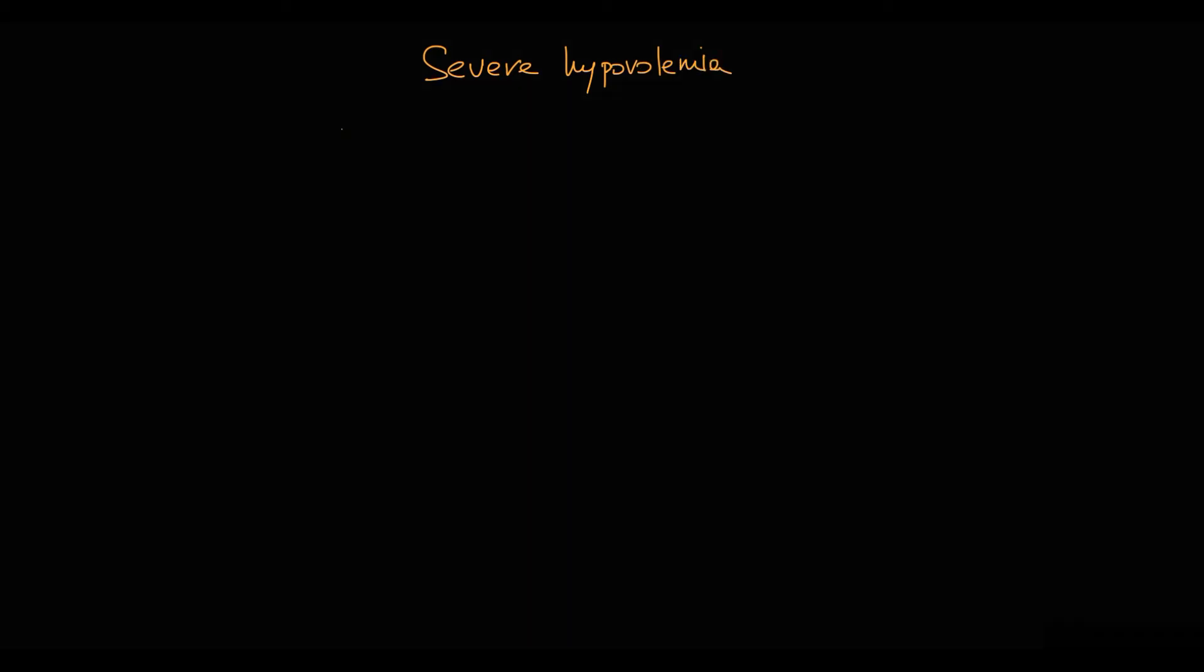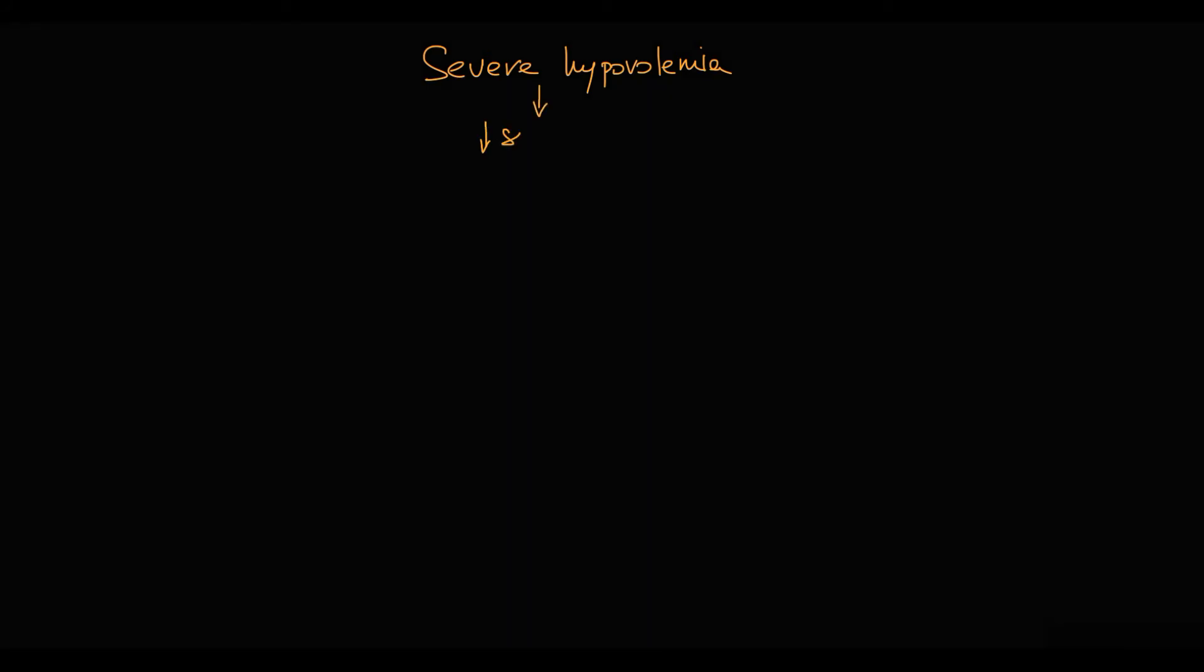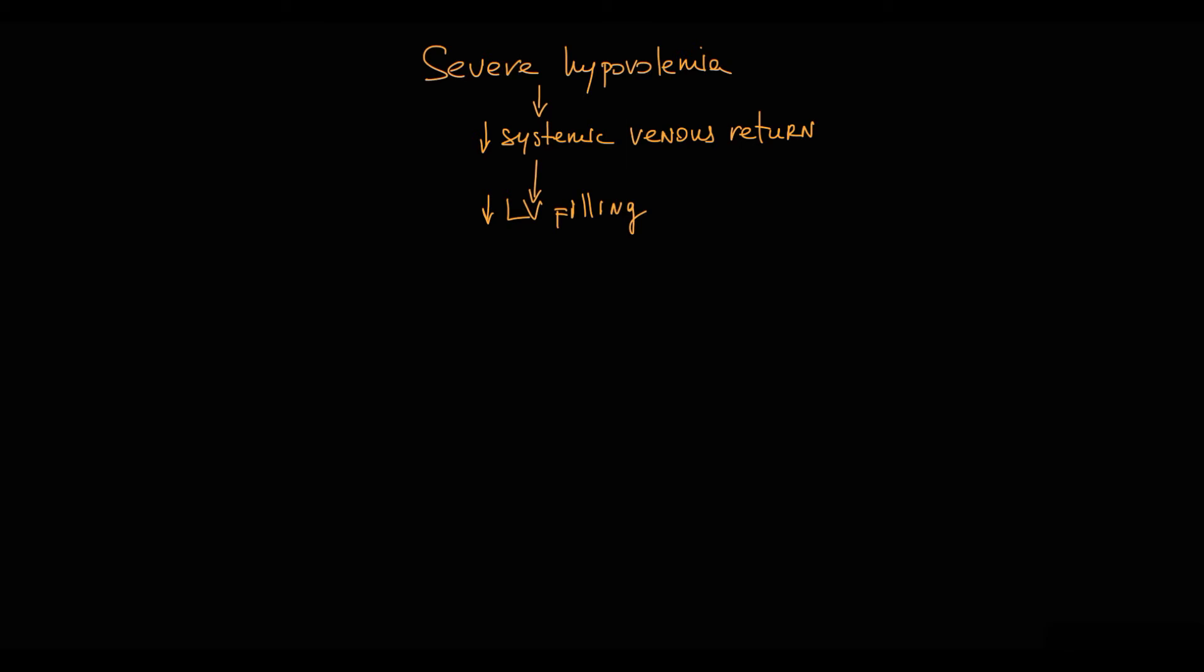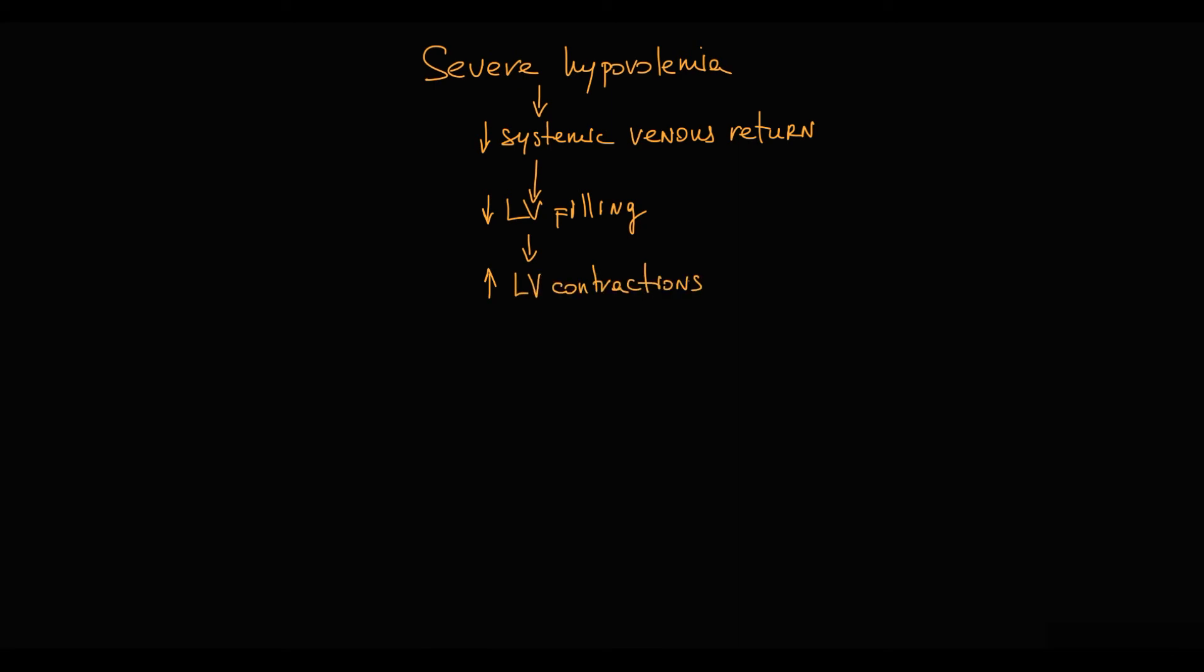Because severe aortic stenosis causes increasing left ventricular pressure that causes mechanical stimulation of baroreceptors and this may provoke hypotension. Also, Bezold-Jarisch reflex can occur in case of severe hypovolemia. Because in most cases with hypovolemia, Bezold-Jarisch reflex is inhibited to prevent decrease in blood pressure. But severe hypovolemia causes severe decrease in systemic venous return that results in substantially decreased left ventricular filling. Basically, left ventricle becomes empty, and in this situation left ventricular walls begin to contract actively to compensate hypotension, it's called hyperkinetic heart.